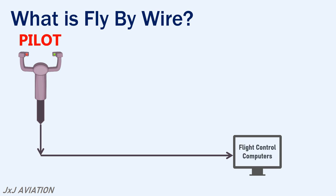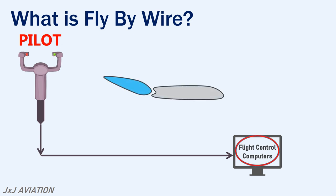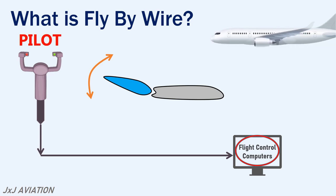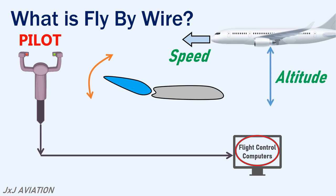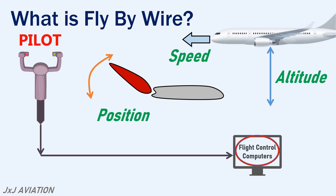The flight control computers analyze the incoming signal and determine how much the control surface needs to be moved to obtain the required output. The computer will consider different factors such as the speed at which the aircraft is flying, the altitude of the aircraft, and the current position of the control surface. Based on these factors, the computer decides how much deflection is required on the control surface and sends the commands to the actuator accordingly.